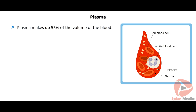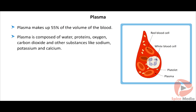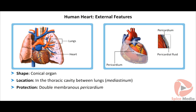Plasma makes up 55% of the volume of the blood. Plasma is composed of water, proteins, oxygen, carbon dioxide and other substances like sodium, potassium and calcium. The heart is a conical muscular organ involved in pumping of blood.